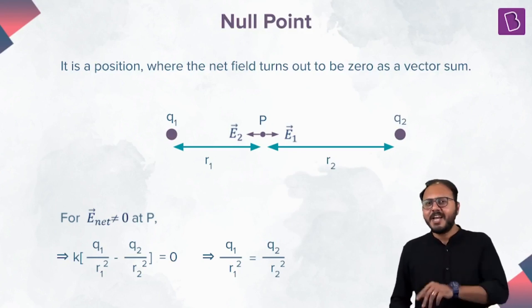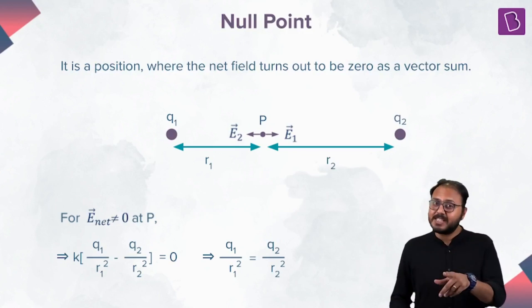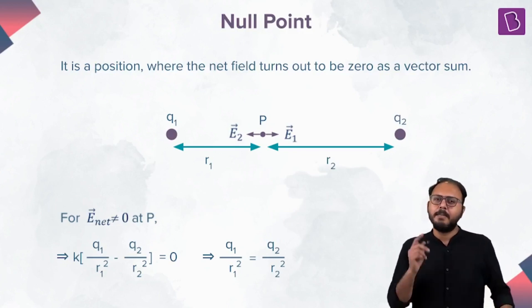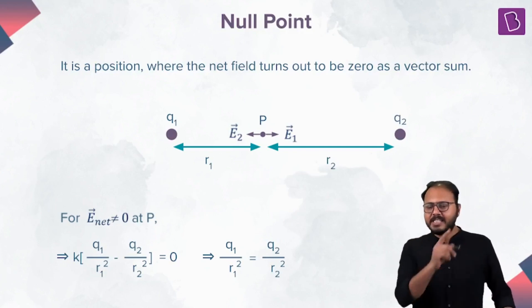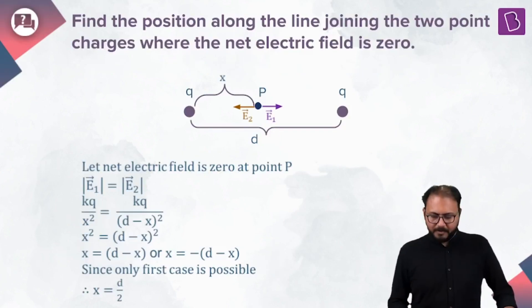If these charges are unequal, is there still a possibility of stable equilibrium? Yes. The null point will be closer to the charge of smaller magnitude. I made those predictions. Let's see if numbers keep my prediction absolute or not.